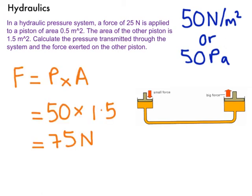So a quick rearrangement of our formula, like so, will show us that if pressure equals force over area, force is equal to pressure multiplied by the area. And if we substitute in our values, we've worked out the pressure, which was 50 pascals. We know that the surface area of this piston is 1.5. 50 multiplied by 1.5 is 75 newtons, OK?